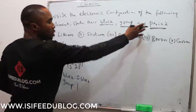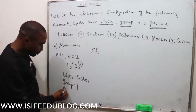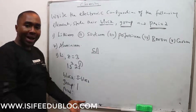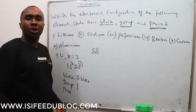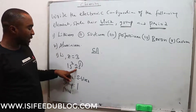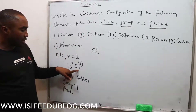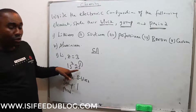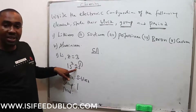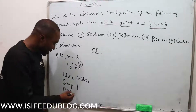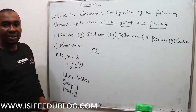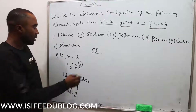The period is the principal quantum number — the number at the back of the last S orbital. The last orbital here is S, and the number at the back of it is 2. That means the period is 2.